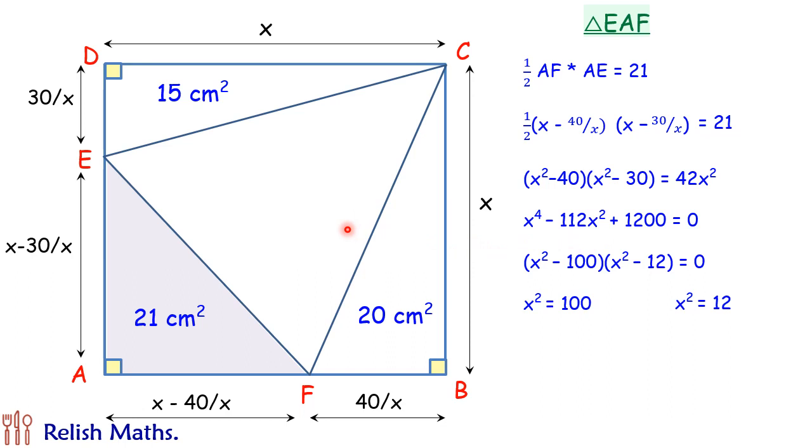So if we look at it, x is the side of the square, so x squared is representing the area of the square. Now area of the square can never be less than the part of the area, so it can never be less than 21 centimeter squared. So here the x squared equals 12, that's an invalid answer. So valid answer is x squared equals 100.